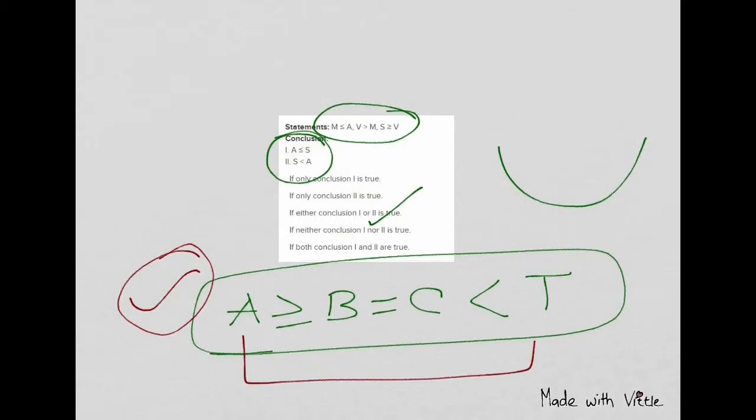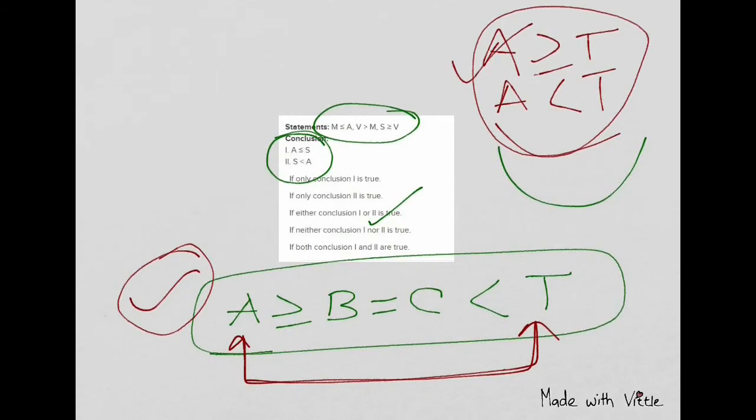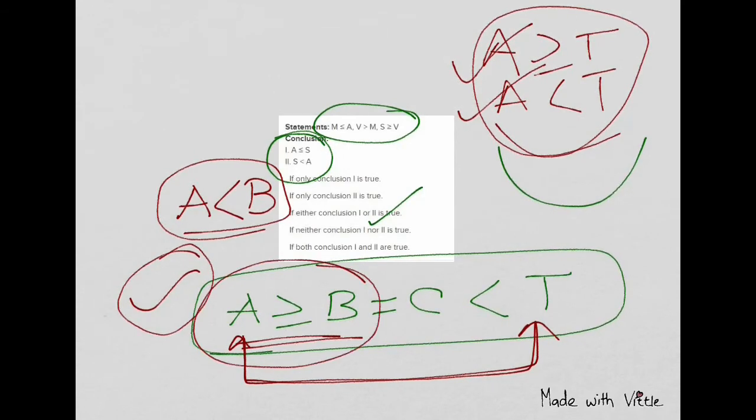To solve these kind of questions, if you see this, you can see there is no relationship between A and T. They will give you A is greater than T or maybe A less than T. This can be true, so you will mark this can be true. What is definitely wrong you have to find is like maybe here they give you A is less than B. It's not possible, it's impossible to write A is less than B because it's given A is greater than equal to B.